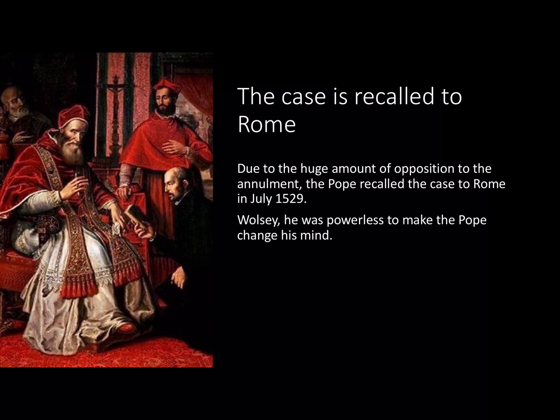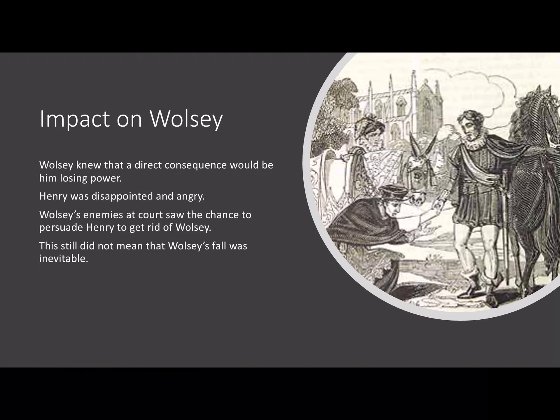As a result of the failure of Blackfriars and due to the huge amount of opposition to the annulment, despite the wishes and attempts of Wolsey, he was powerless to make the Pope change his mind. In July 1529, the Pope recalled the case to Rome, ending the possibility that the marriage would be annulled. Wolsey knew that his inability to gain Henry's annulment would increase his chance of losing power. Henry was disappointed and angry. This meant that Wolsey's enemies at court had the chance to persuade Henry to get rid of Wolsey. However, this still did not mean that Wolsey's fall was inevitable.